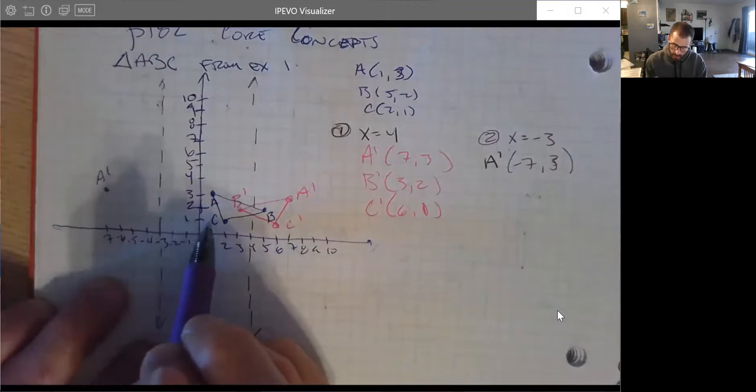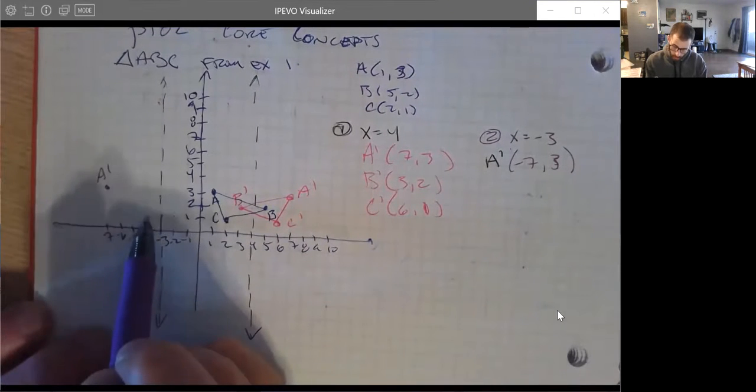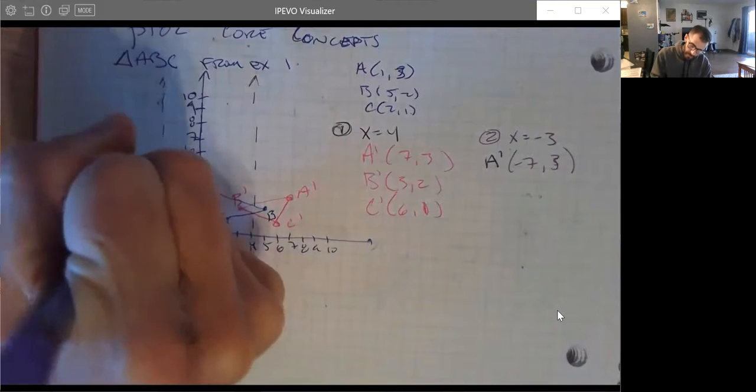Let's do C next. C is one, two, three, four, five units to the right of the line of reflection for number two. So let's go one, two, three, four, five units to the left.